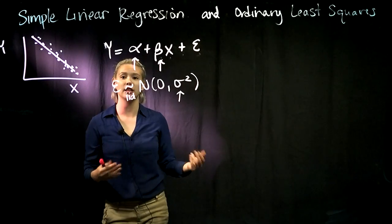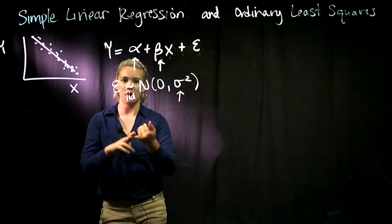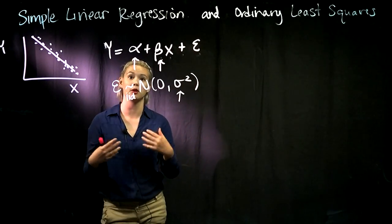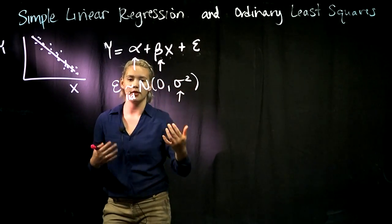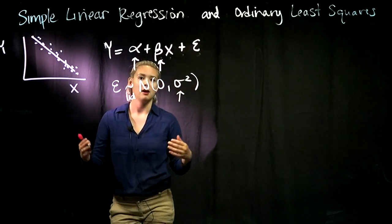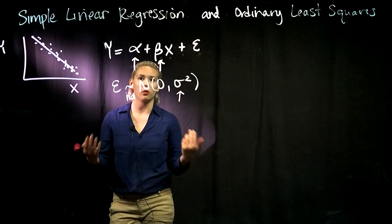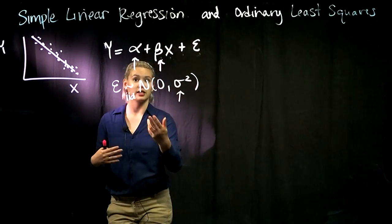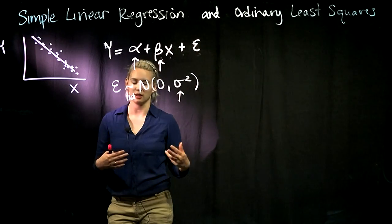In an applied class we just give R or Minitab or whatever software we're using our data and it finds the ideal alpha and beta values for us. But in this class, since it's a more theoretical class, we're learning how do we actually estimate alpha, beta, and sigma squared.